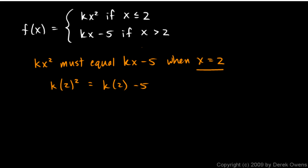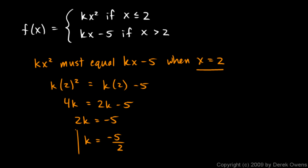And now I have a little equation that I can solve for k. This is 4k on the left and on the right I have 2k minus 5. So it's easy from here. Just subtract 2k from each side and you get 2k is negative 5. So k is negative 5 halves. And that's your answer. That value of k will make this function continuous at x equals 2.